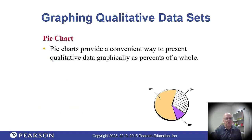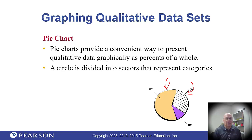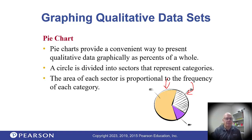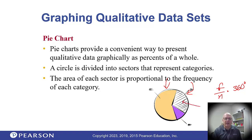Next, the pie chart — you're familiar with those. It gives you a way of representing each part as a percentage for the eye. You divide the circle into sectors that represent categories, which makes it good for categorical or qualitative data. Each sector is proportional to the frequency of each category. Take the frequency divided by n to get the relative frequency, then multiply by 360 degrees and you know how large to make each section.